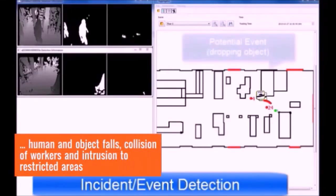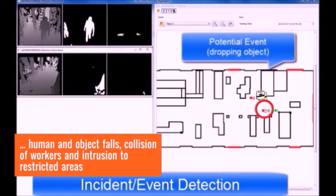Smart depth and thermal cameras detect overheated equipment, human and object falls, collisions of workers and intrusion to restricted areas, locating the incident on digital maps and sending appropriate alerts to other Satisfactory components.